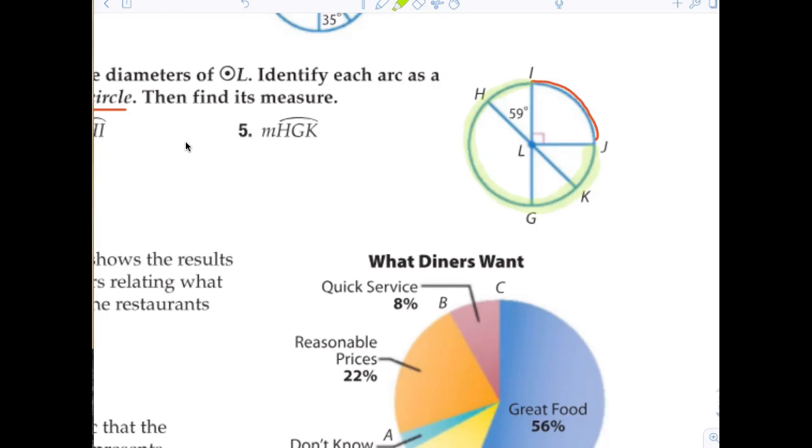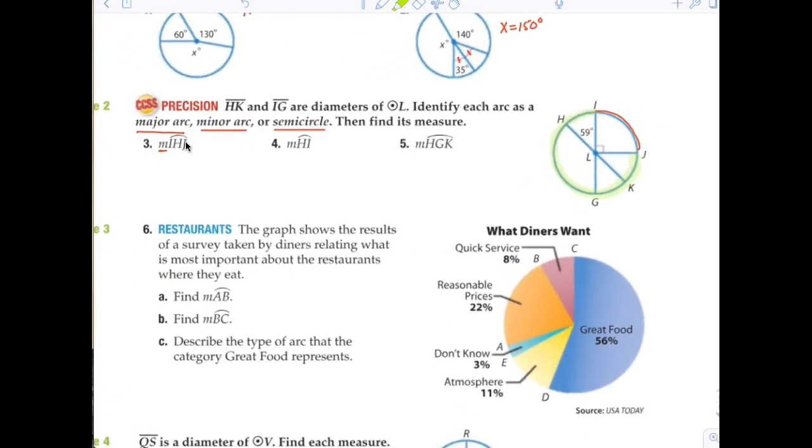So, in this case, the measure of I, H, J would be, obviously, now what? 270. 270. Thank you. I told you. It's really simple. 270 degrees. Now, that would be considered a what? Major arc.